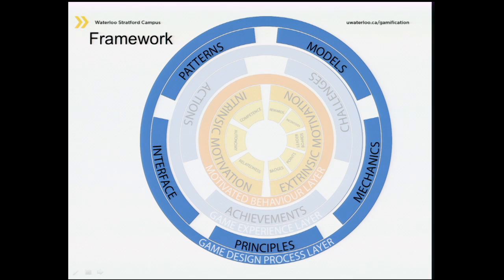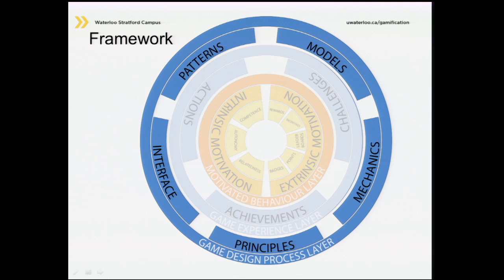We have the game design process layer where we talk about elements of design, but we look at how these elements are not just elements but system processes. You can take each one of these attributes and use it as a sustainable process to create human interaction touch points or experience touch points for your user or player. This is where I relate back to Amy Jo's engagement framework, where she talked about how sustaining engagement can take place in this layer.